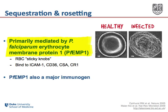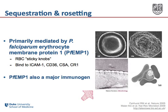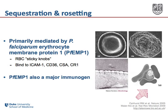These ligands include ICAM1, CD36, chondroitin sulfate A, and complement receptor 1. In the bottom left picture you can see the apposition of an infected red blood cell on top and an endothelial cell on the bottom, and how this interaction between the two cells appears to be dependent upon those sticky knobs. And on the bottom right you can see a rosette — an infected red blood cell in the middle attached to two uninfected red blood cells.